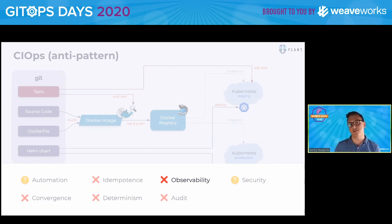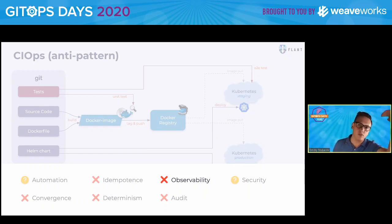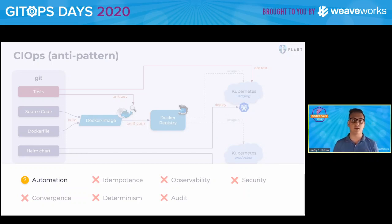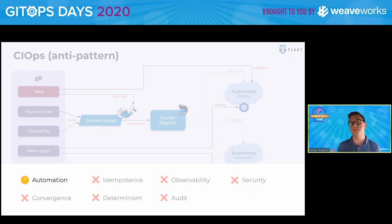I will not even talk about observability because in this scenario we don't have anything. Going back to audit, we have to go through all the CI jobs and all the dependencies, and we never know what the change really is. Speaking about security, the main concern is that our CI system has access to the Kubernetes API. And if we talk about automation, this pipeline usually requires a lot of effort to fix it because it's broken in a lot of places — fundamentally broken.